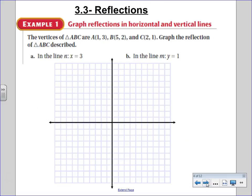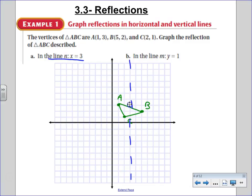Let's take a look at reflections in the coordinate plane. We'll begin by graphing the vertices of triangle ABC and then graphing the reflections as indicated. First, we graph the reflection of the triangle across the line x equals 3. In reflections, we reflect perpendicular to the line of reflection and maintain equal distance. Point A is two units from the line of reflection, so we reflect it two units across. B is two units to the right, so it reflects two units to the left. C is one unit to the left, so it becomes one unit to the right.